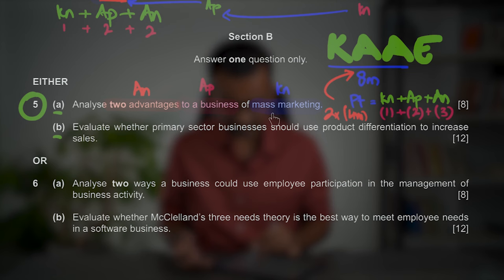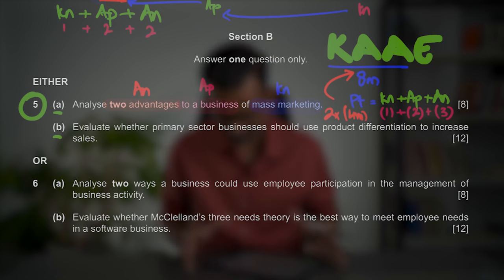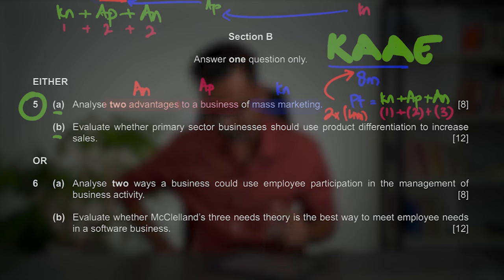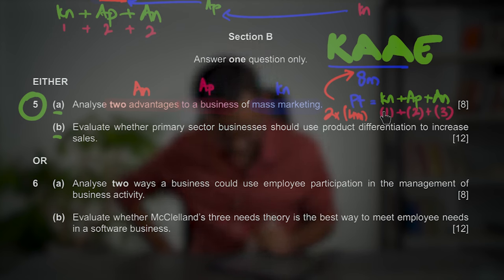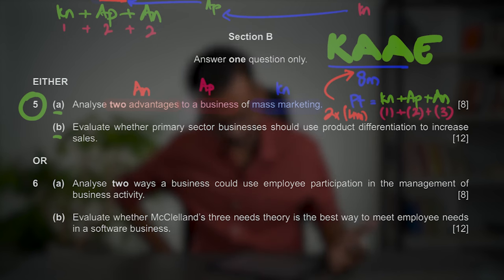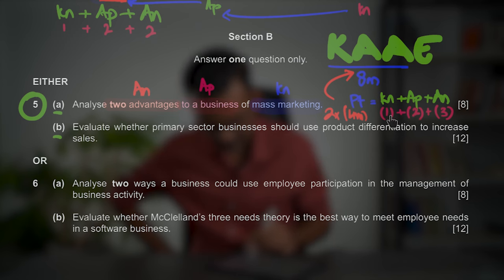For example, 'analyse two advantages to a business of mass marketing': start with a definition of mass marketing to get your knowledge marks rolling. First point — mass marketing allows you to target larger audiences. Application: you can launch a USP to reach a larger audience and sell more units. Analysis: this lowers your average cost of production, leading to more sales and higher profits. Make multiple layers to your analysis — at least three. Repeat this structure twice for your eight-marker.